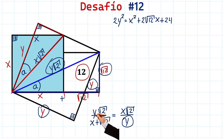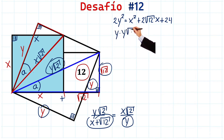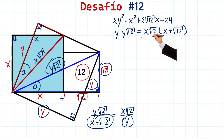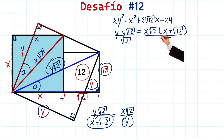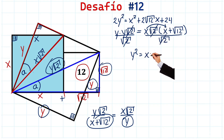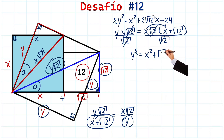Now let's move Y to the other side to multiply, and this here as well. On the left side we'll have Y times Y times √2, and this will equal X times √2, multiplied by X plus √12. Pay close attention that there's a √2 on both sides — we can divide by √2 on both sides of the equation. Everything simplifies, and Y times Y is Y squared. Applying the distributive property: X times X is X squared, and X times √12 gives X√12, which we can also write as √12·X.